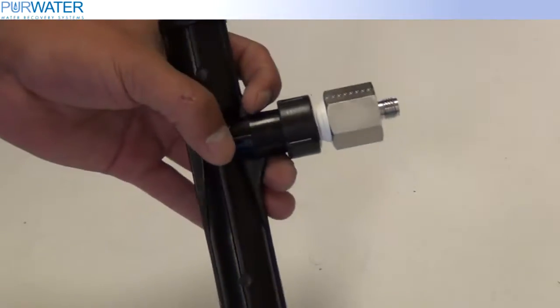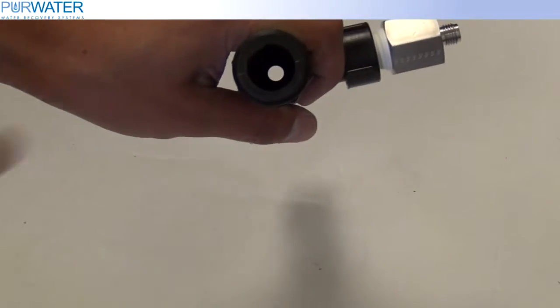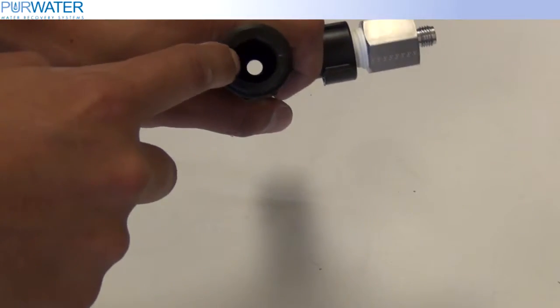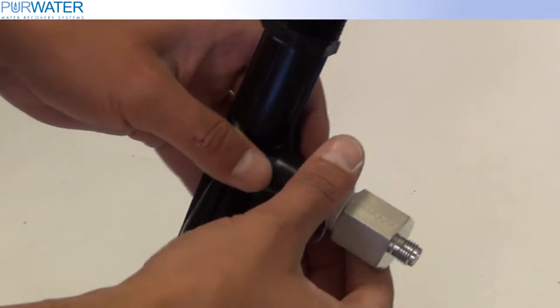After removing the MOSI, inspect the inside to make sure it is not clogged. Remove the pipe fitting to access the check valve of the MOSI.